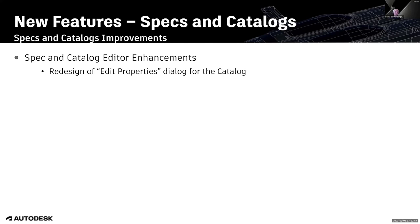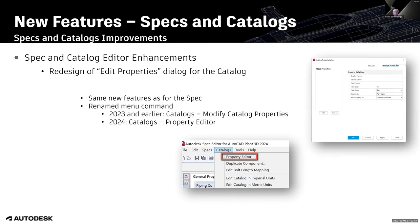Now talking about added properties for the catalog — in general it is the same as for the spec. But there is one additional thing to know: one item was renamed. Formerly it was called 'Catalogs modify catalog properties,' and now it is called 'catalogs property editor.'